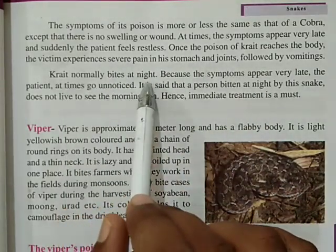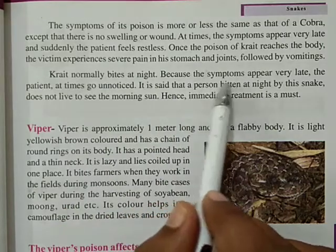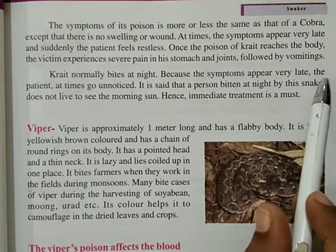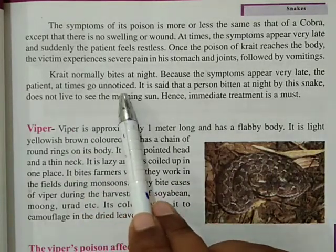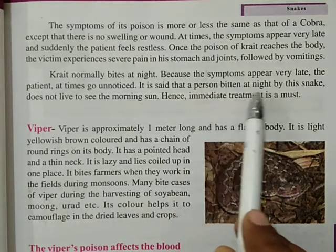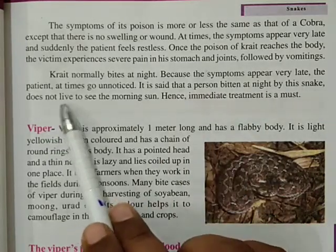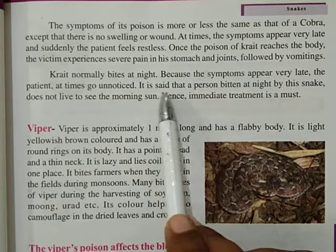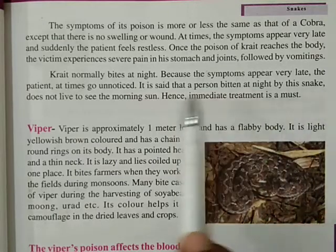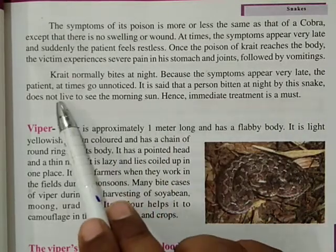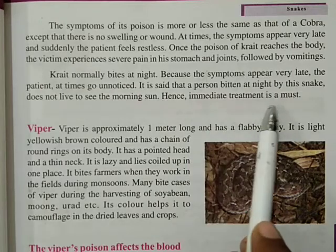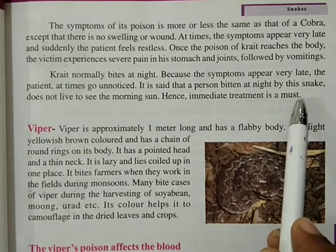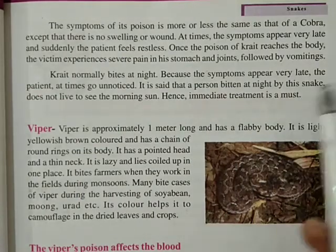Krait normally bites at night — zyada tar krait raat mein kaate hai. Because the symptoms appear very late, the patient at times goes unnoticed. It is said that a person bitten at night by a snake doesn't live to see the morning sun — jis vyakti ko raat mein agar saamp kaata hai, toh woh subah ka suraj nahin dekh pata. Hence, immediate treatment is a must — jab kabhi bhi aisa ho, koi bhi snake agar bite kar jaye, toh hume turant wahan par treatment ke liye move kar jana chahiye.